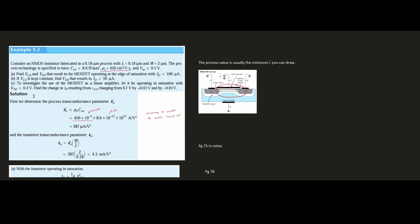We're going to be taking a look at this example. We have a lot of parts to it, so we're going to be covering a lot of MOSFET material. We are going to consider the NMOS transistor fabricated in a 0.18 micrometer process with L equal to 0.18 micrometers and W is equal to 2 micrometers. The process technology is specified to have C subscript OX equal to 8.6 femtofarads over micrometers squared, and then something very similar for our μN. And this is accompanied by a VTN equal to 0.5 volts.